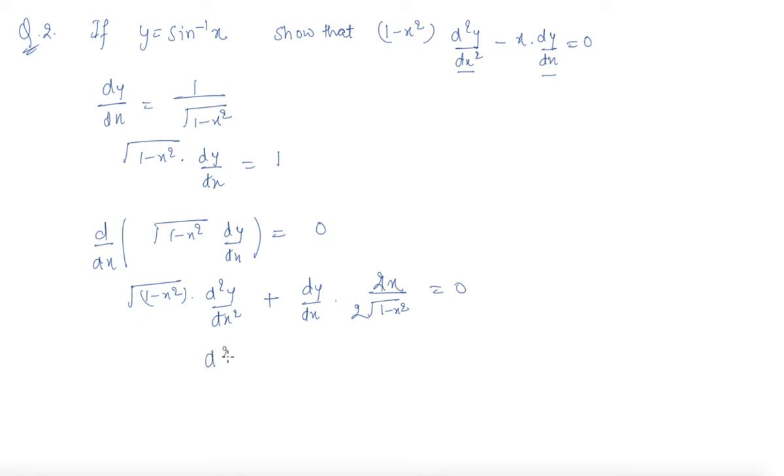d²y/dx² is coming down in terms of, you can put the value of this. If I multiply my equation with root (1 - x²), I will get a negative sign here also. The result is somewhat similar to what we need to find.